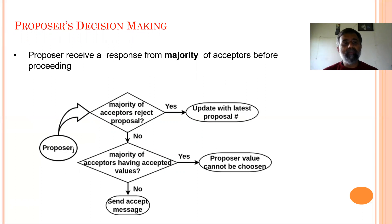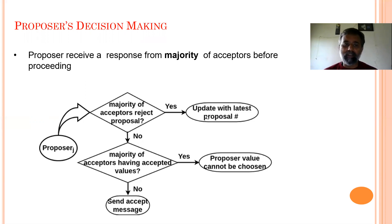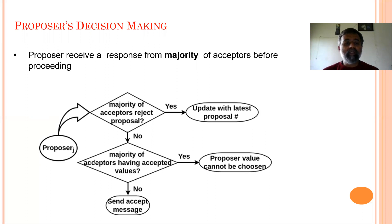The proposer's decision making will be according to the majority of acceptors. The proposer will check whether the majority of acceptors reject his proposal — if so, he may update his proposal and again try to find the majority. If not rejected, he will check whether the majority of acceptors have accepted his proposal. If they did, the proposer value can be chosen and a final consensus will be accepted. If the majority of acceptors have accepted values already, then no one else can select a different value.